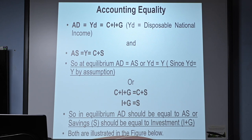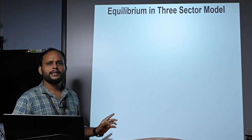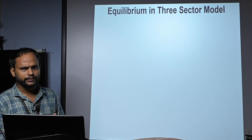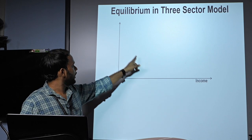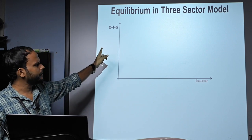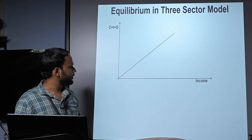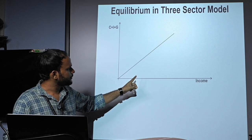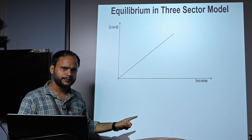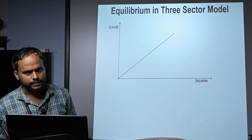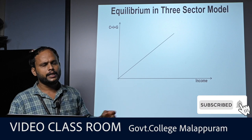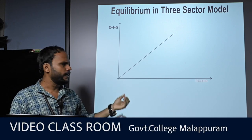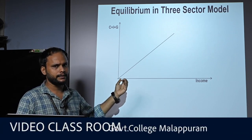These two equalities can also be expressed with the help of a graph. On the X-axis we measure income, and on the Y-axis we measure aggregate demand (C + I + G). We draw a 45-degree line, which is the aggregate supply curve. This 45-degree line acts as a guideline and helps us identify equilibrium when income and aggregate demand are shown in a graph — it shows when the aggregate demand curve intersects the aggregate supply curve.